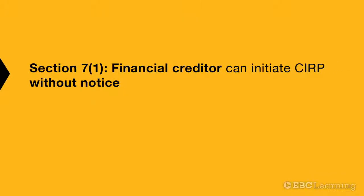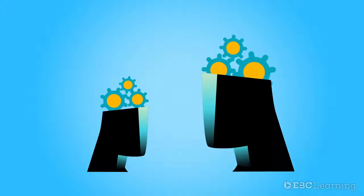Insolvency resolution process on default of repayment of financial debt is covered under Section 7 of the Insolvency and Bankruptcy Code. It provides that a financial creditor can initiate corporate insolvency resolution process. Notably, he can do this without issuing a notice to the corporate debtor saying that he has defaulted in repaying the financial debt. This is significant — it is a paradigm shift.